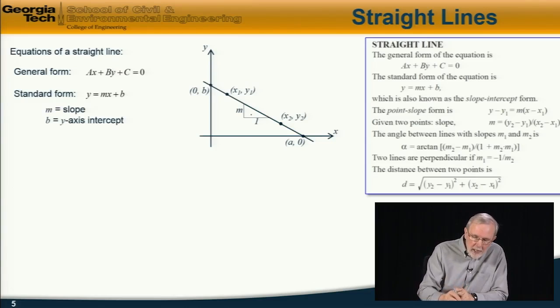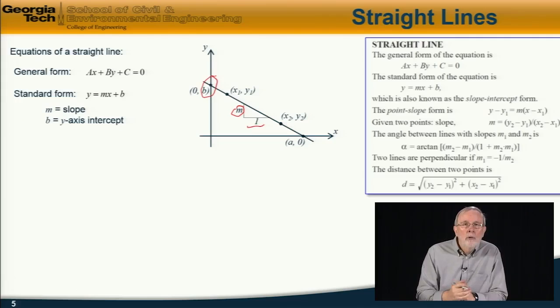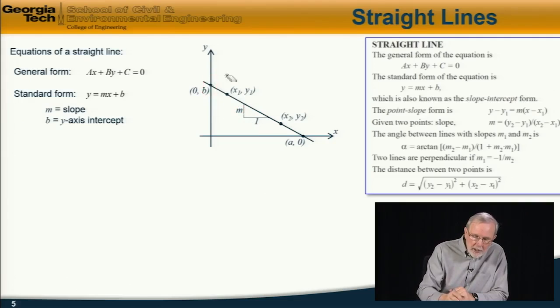In other words, the rise m in horizontal distance 1, and b is the y-intercept or intersect, the point where the straight line crosses the y-axis.